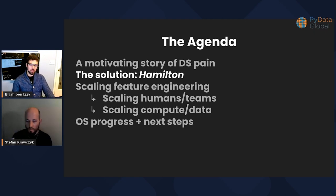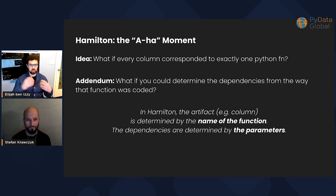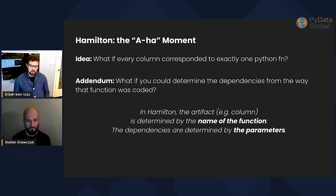So let's talk about the solution we came up with at Stitch Fix, which we called Hamilton. The aha moment was the idea that instead of just writing a bunch of columns as procedural lines in a file, each one corresponds to exactly one Python function. Furthermore, you can determine the dependencies from the way that function is coded. That's how we came up with Hamilton. In Hamilton, the artifact — a column in this case, but it can be anything — is determined by the name of the function, and its dependencies are determined by the parameters.